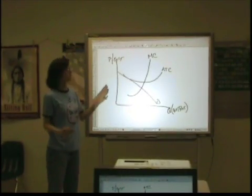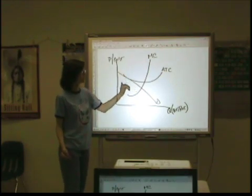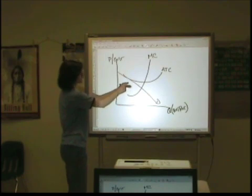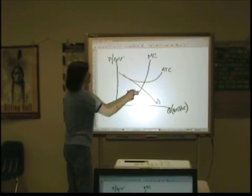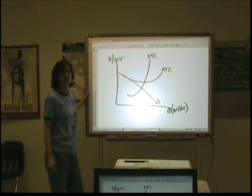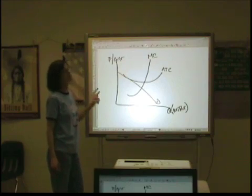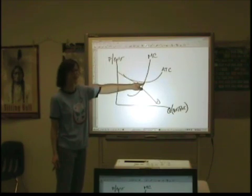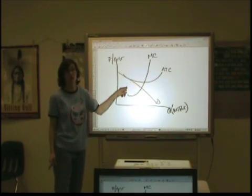Now, one thing that you'll notice, because of the slope of the demand curve, because it's not flat, there's no way for this curve to be tangent to the lowest point of your ATC. That's why this is an imperfectly competitive market. Because you cannot hit that intersection with that point of tangency.